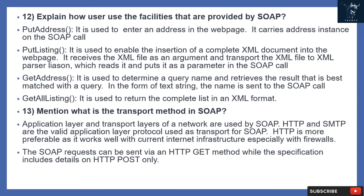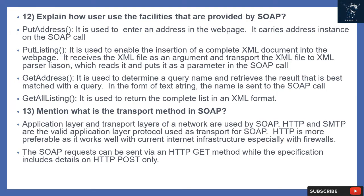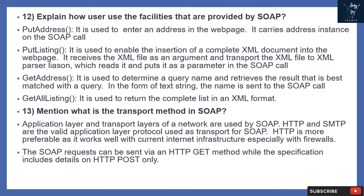Question 13: What is the transport method in SOAP? Application layer and transport layers of a network are used by SOAP. HTTP and SMTP are valid application layer protocols used as transport for SOAP. HTTP is more preferable as it works well with current internet infrastructure, especially with firewalls. The SOAP request can be sent via an HTTP GET method, while the specification includes details on HTTP posting.